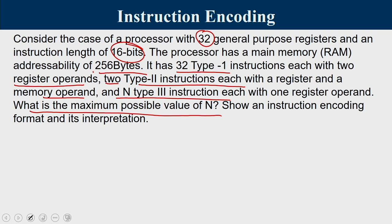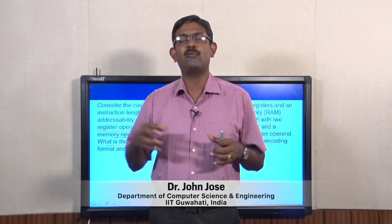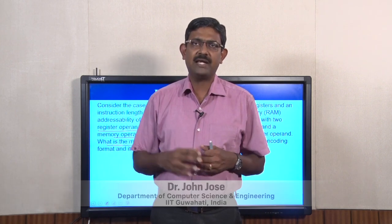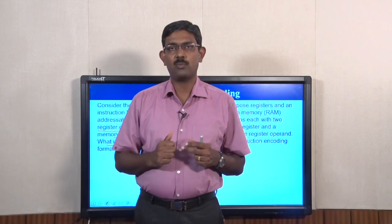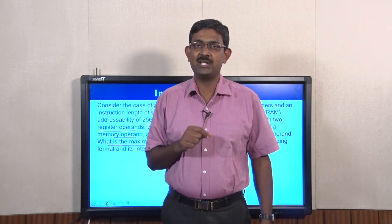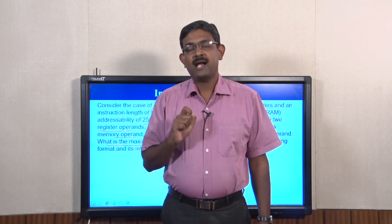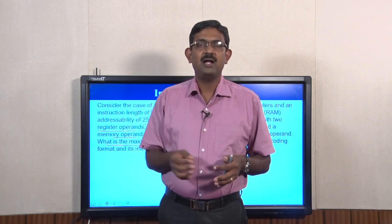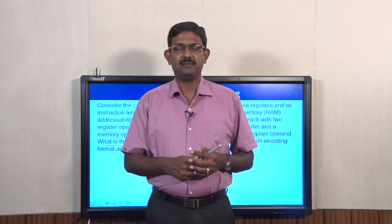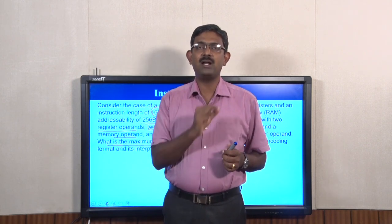Let us understand what this question is all about. We have a specific processor with 32 general purpose registers used as part of the instructions, and each instruction is 16 bits. The instruction has an opcode portion and operands. There are 3 different types of instructions. Type 1 has 2 register operands; Type 2 specifies a register name and a memory operand — and there are only 2 Type 2 instructions; Type 3 has only 1 register operand.